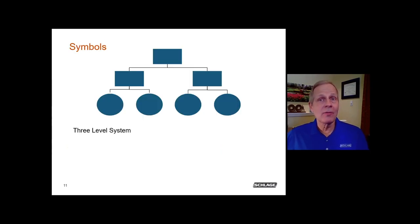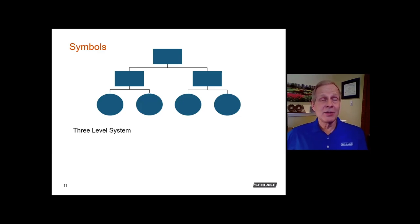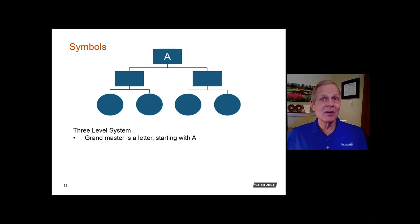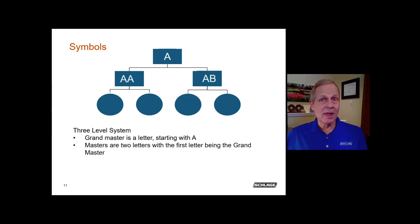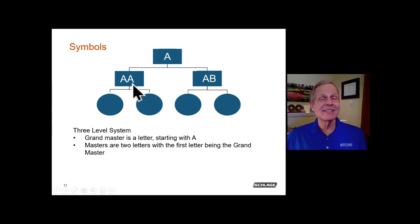Now we'll get into the letters and numbers used to assign key symbols — this is called standard key coding, an industry standard for labeling the keys in a master key system. It is highly recommended whenever setting up a new system because it is universal, well laid out, and logical, showing a clear hierarchy. In a three-level system, the grand master key is a single letter. The master keys use two letters, with the first letter matching the grand master key and the second letter following the alphabet sequentially — so the first master key is AA, the second is AB, and so on.